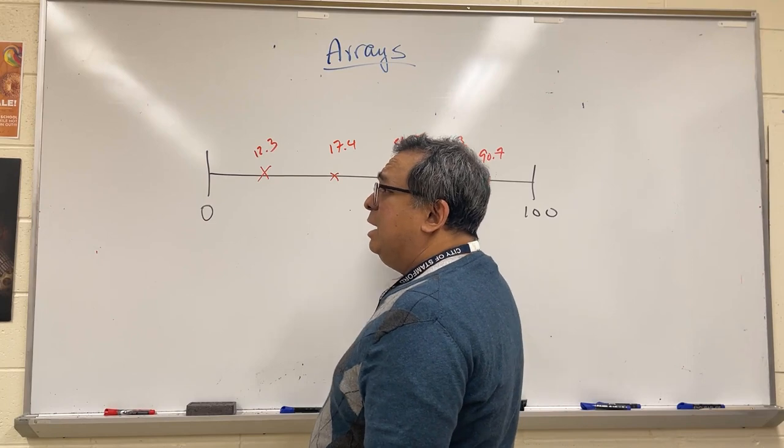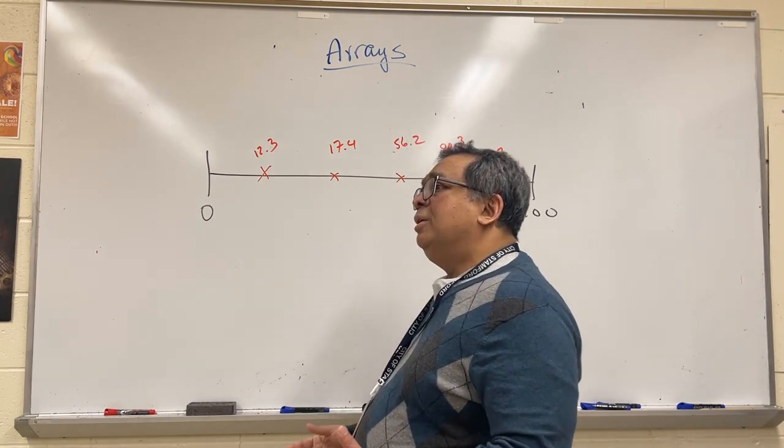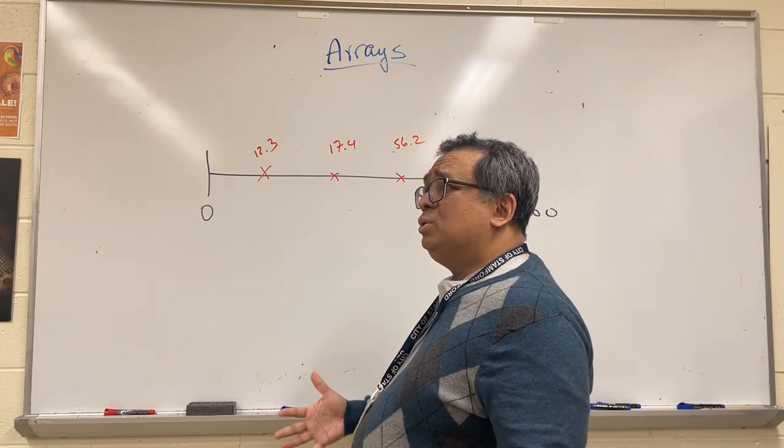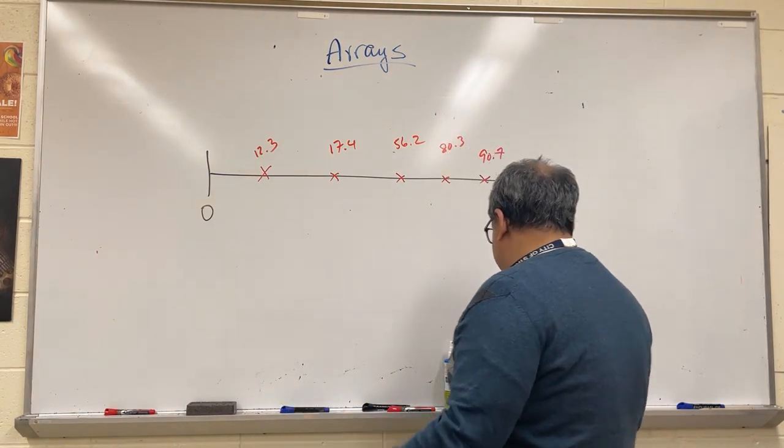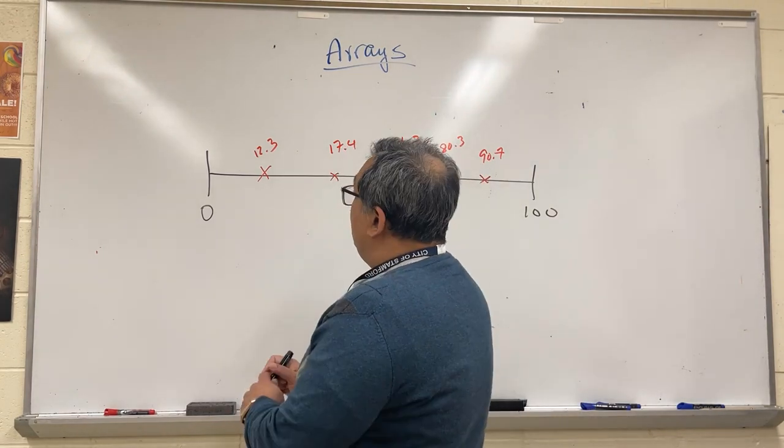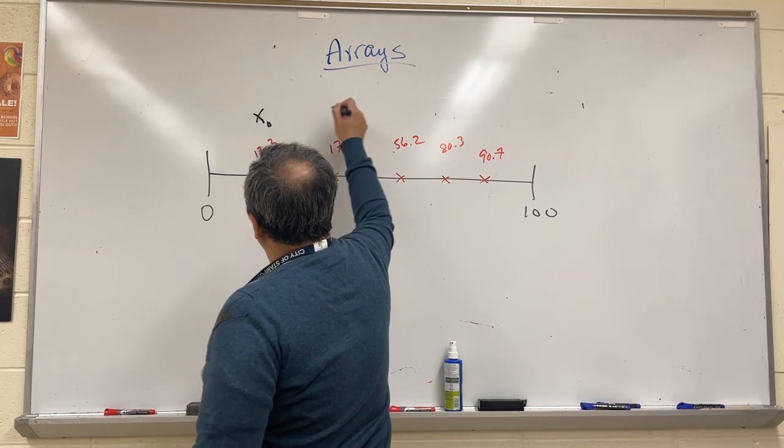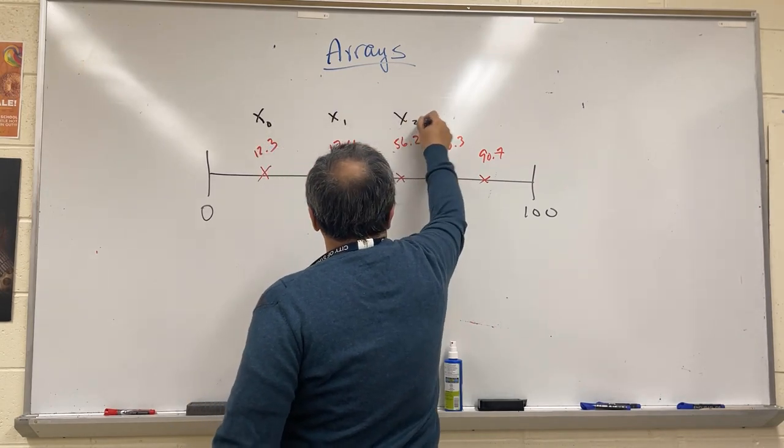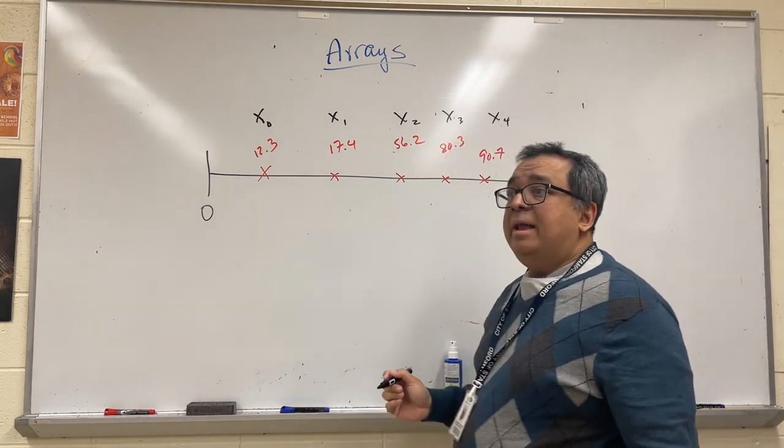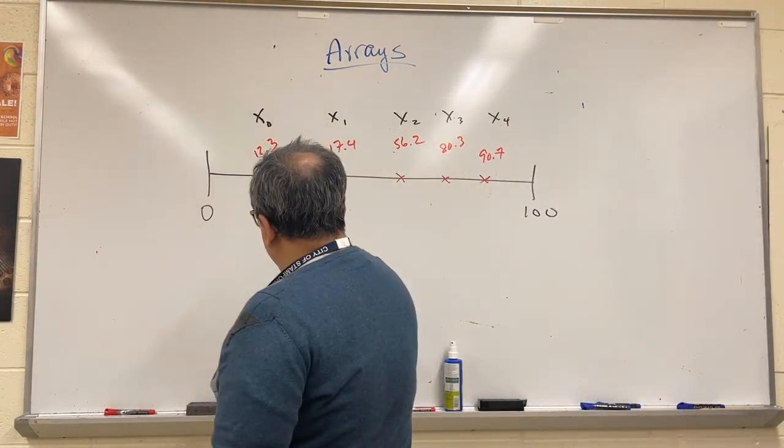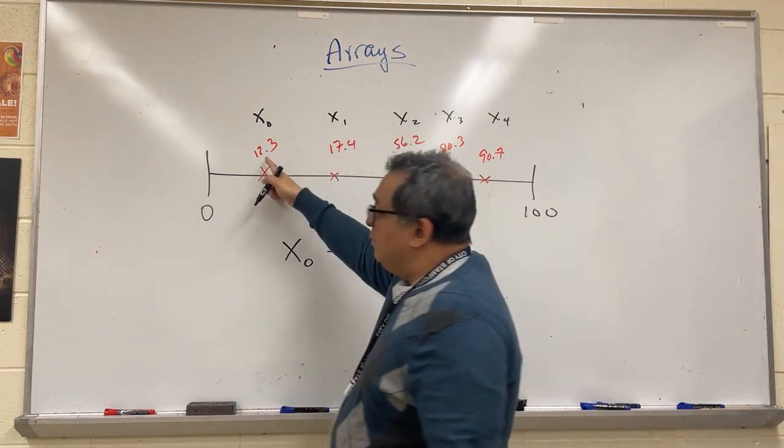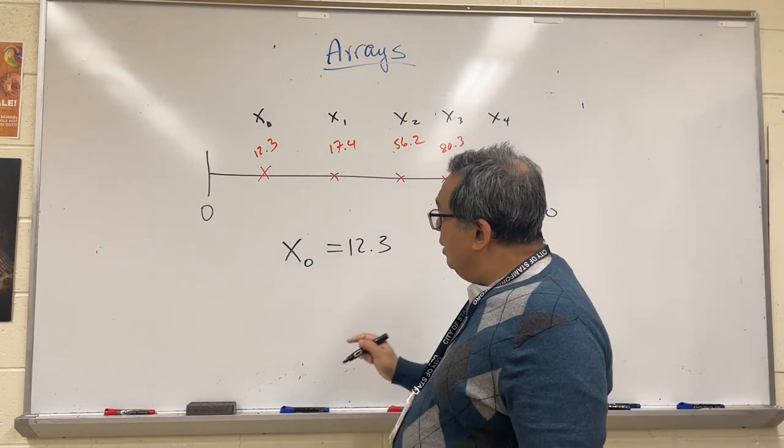We have a number line, we ran an experiment, we got these data, and your math teacher wants to refer to these points generically using some sort of list. She may say that we're going to number the list and refer to this as x sub zero, this will be x sub 1, x sub 2, x sub 3, and x sub 4.